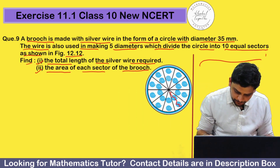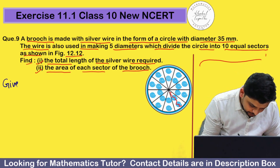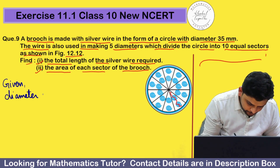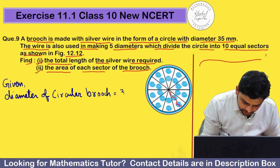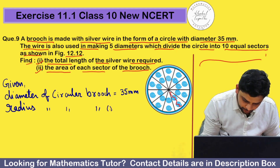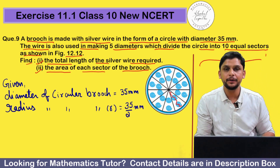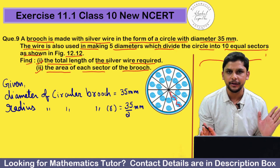Now we will solve this question. First, we will write the given values. Given: diameter of circular brush = 35 millimeters. Therefore, radius of circular brush = 35 upon 2 millimeters.